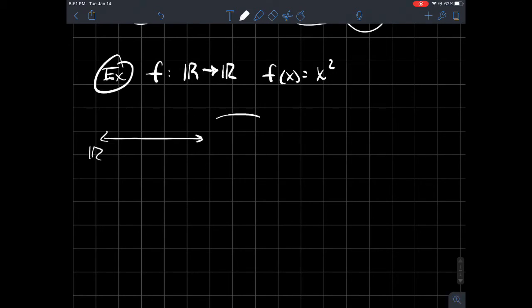One blob over here is one copy of the real line, that's my domain, and I've got a function that is going to tell me how points over here in this copy correspond to points over here on this copy of the real line.